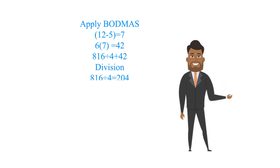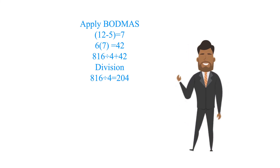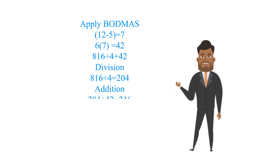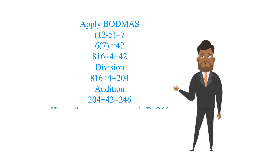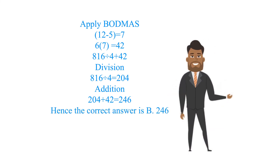816 divided by 4 equals 204. Addition: 204 plus 42 equals 246. Hence the correct answer is b. 246.